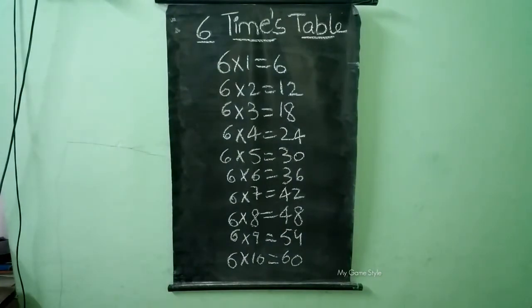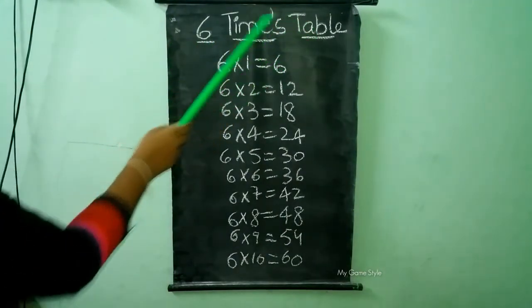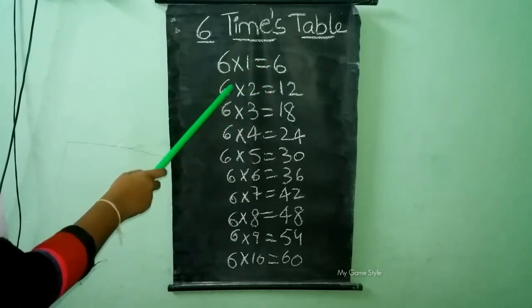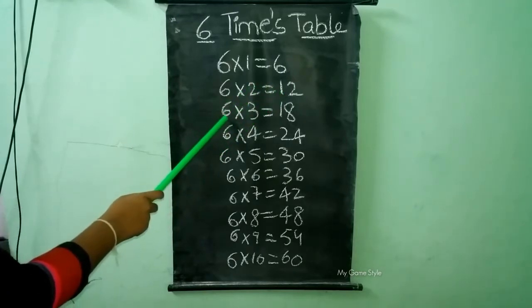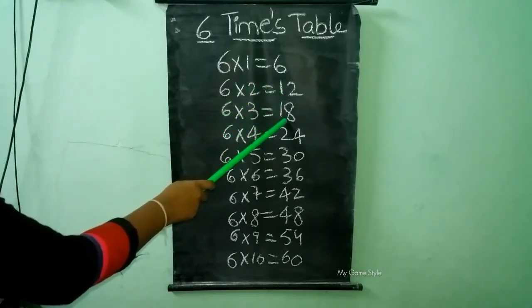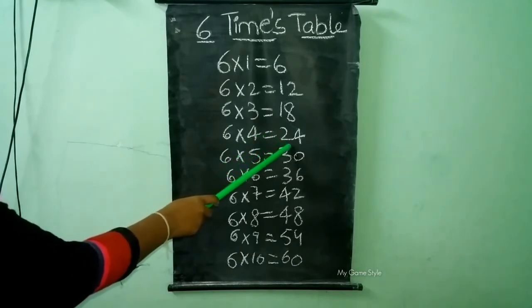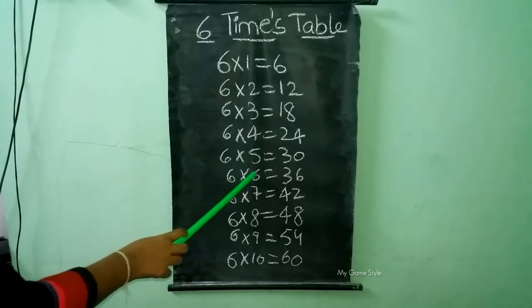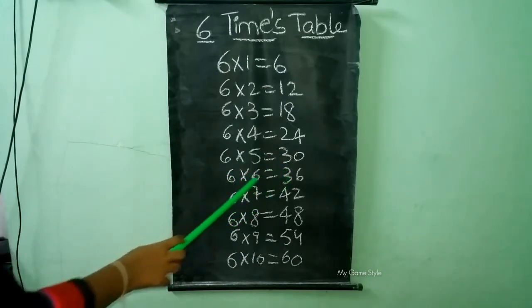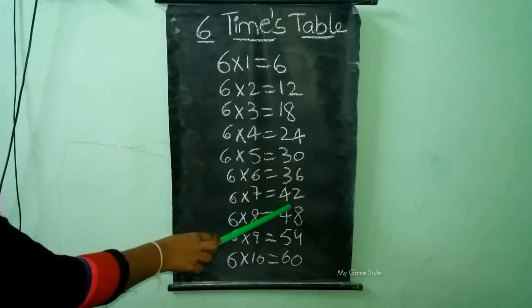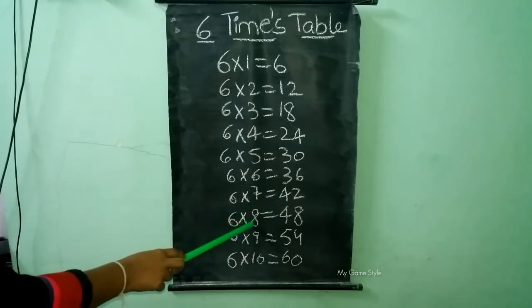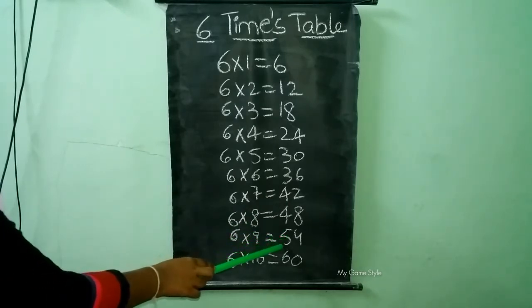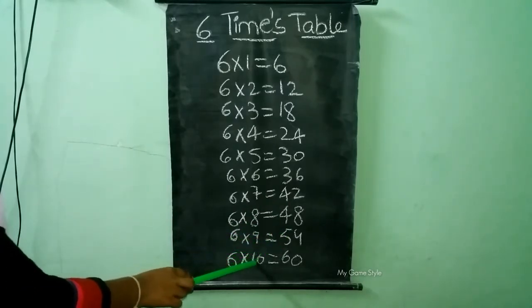6 times table. 6 times 1 is equal to 6. 6 times 2 is equal to 12. 6 times 3 is equal to 18. 6 times 4 is equal to 24. 6 times 5 is equal to 30. 6 times 6 is equal to 36. 6 times 7 is equal to 42. 6 times 8 is equal to 48. 6 times 9 is equal to 54. 6 times 10 is equal to 60.